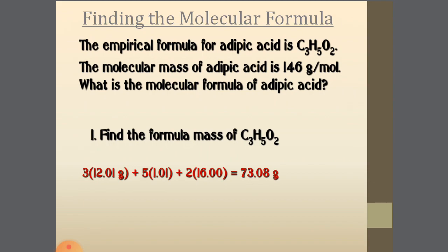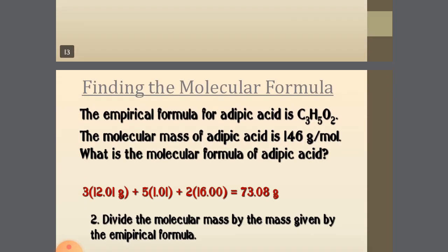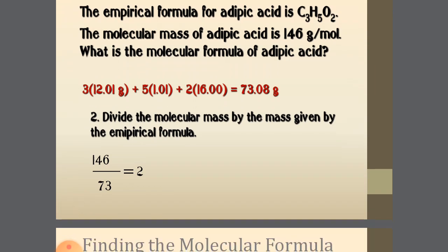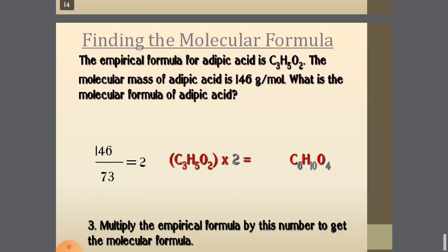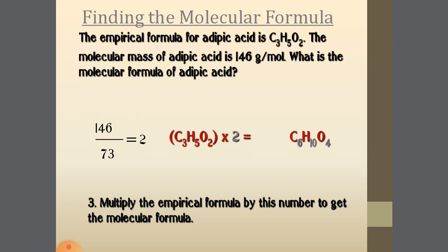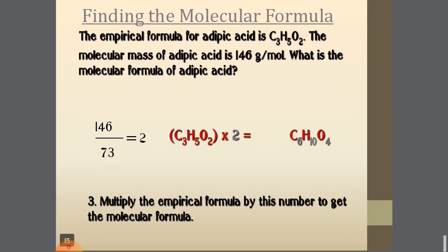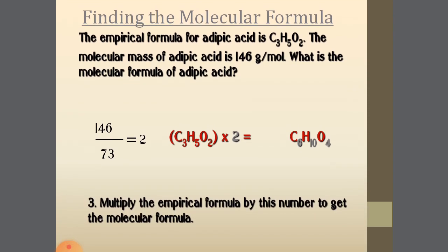Dividing molecular mass by empirical formula mass: 146/73 = 2. So multiply the empirical formula by 2: C₃H₅O₂ × 2 = C₆H₁₀O₄. That is the molecular formula of adipic acid. To summarize: multiply the empirical formula by the number obtained from molecular mass divided by empirical formula mass to get the molecular formula. This concludes today's topic — percentage composition, empirical formula, and molecular formula.